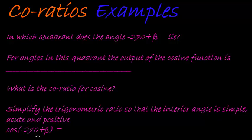We know we are using cosine and sine as co-ratios of each other. So first of all, we ask ourselves: in which quadrant does the angle -270 + β lie?